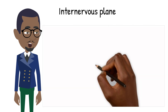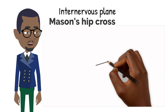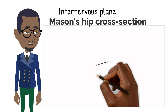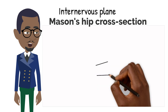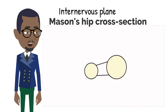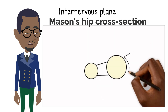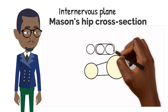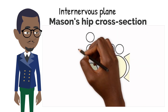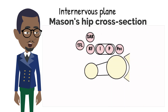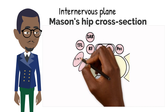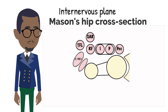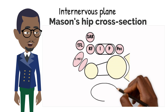The internervous plane is easily demonstrated using Mason's diagrammatic representation of the cross-section at the level of the greater trochanter. Anterior muscles, abductors, and gluteus maximus are identified.